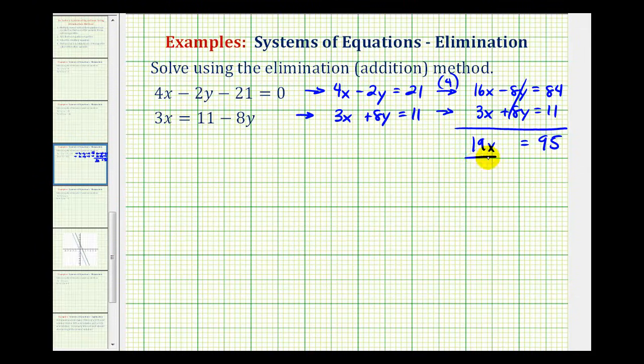So now we'll divide both sides by 19 to determine the value of x. 95 divided by 19 is equal to 5, so we know x must equal 5.